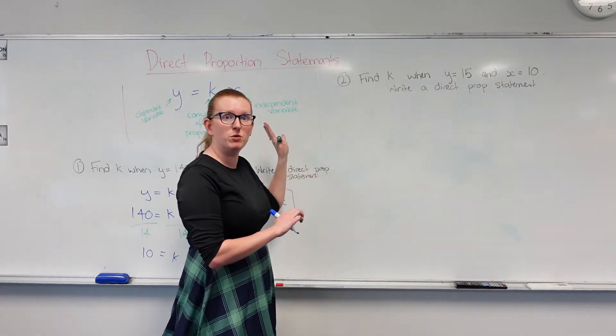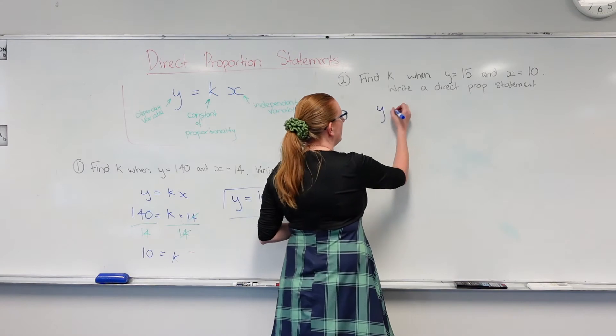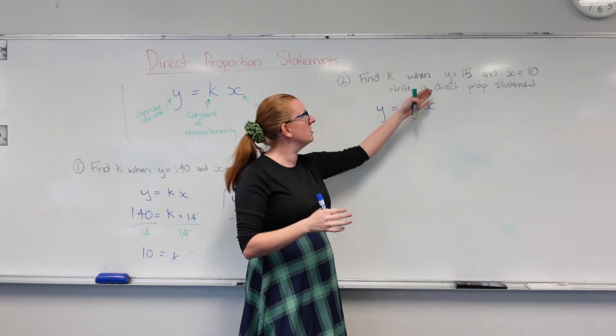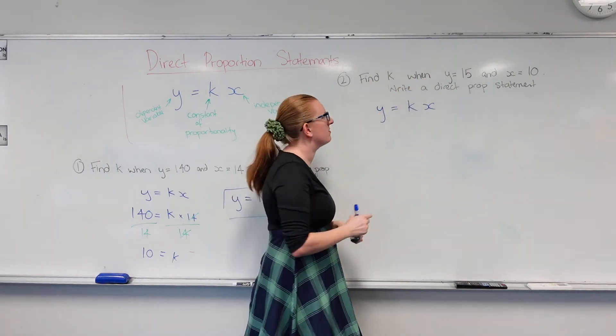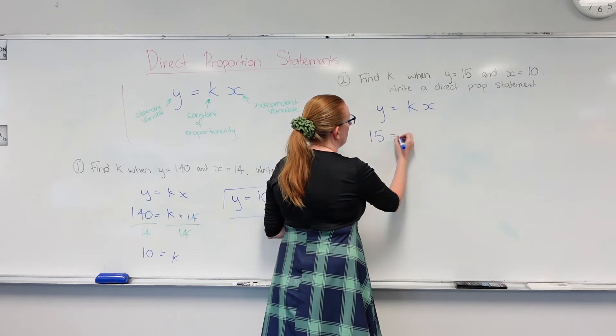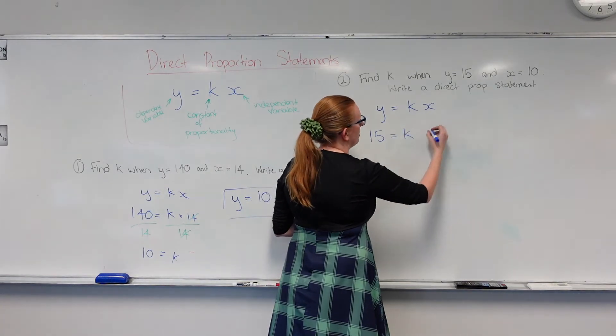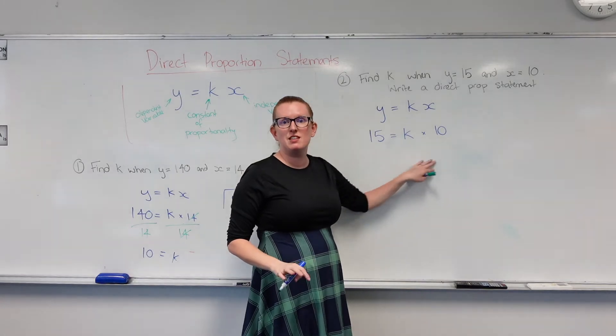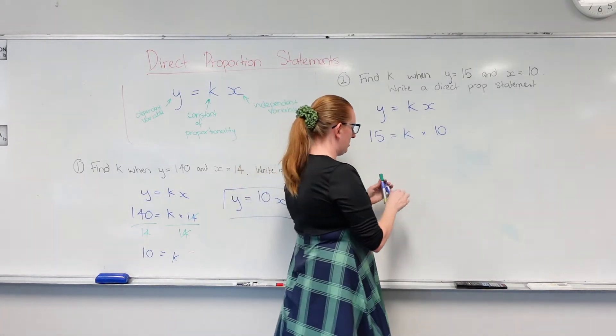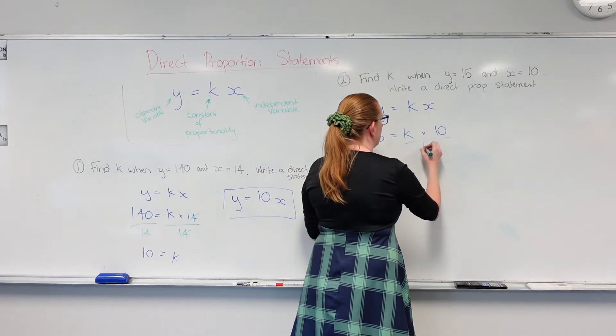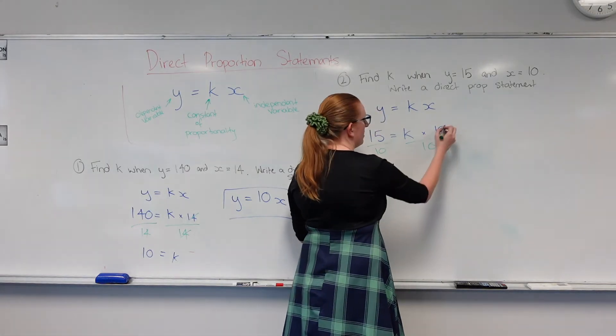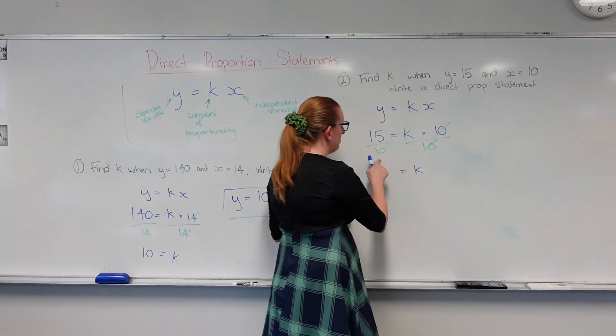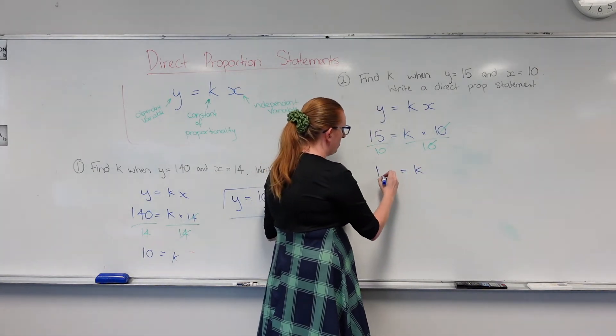So again, I'm going to take my formula, which is y equals kx, and in the place of those letters I'm going to sub in the numbers that they've given me. So y is 15 equals k times 10. How do I move this 10 to the other side to make k the subject? I'm going to divide both sides by 10. They've cancelled out, so k is equal to how many 10s go into 15. I get 1.5.